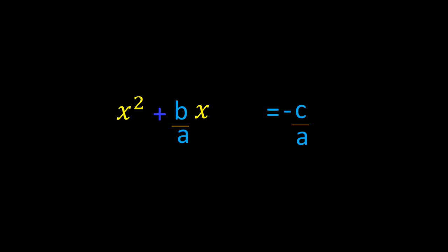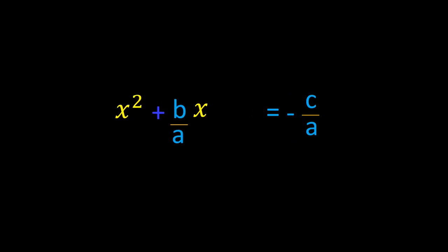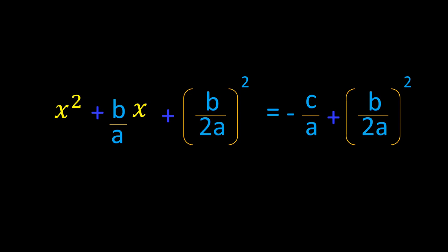To make x squared plus b over a times x a perfect square trinomial, we have to add (b over 2a) squared on both sides of the equation. We know that adding equal quantities on both sides of an equation does not change the value of the equation.